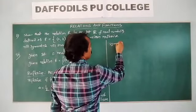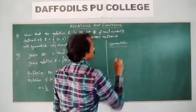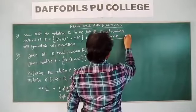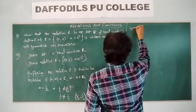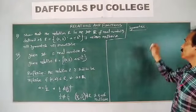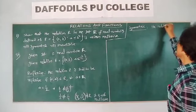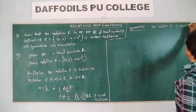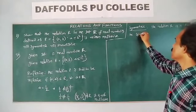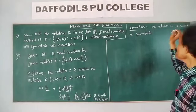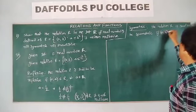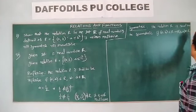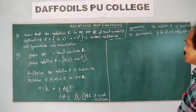Next, symmetric. What is the symmetric definition? The relation R is said to be symmetric if (a, b) belongs to the relation implies that (b, a) also belongs to R. That is the symmetric relation definition.